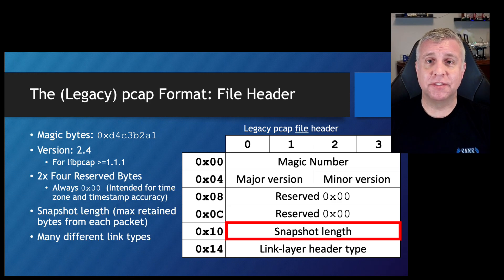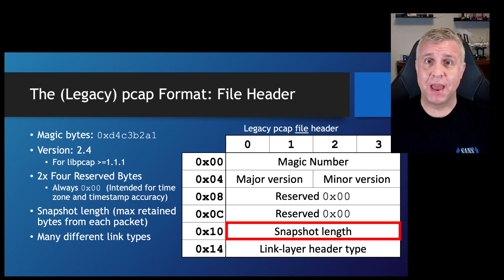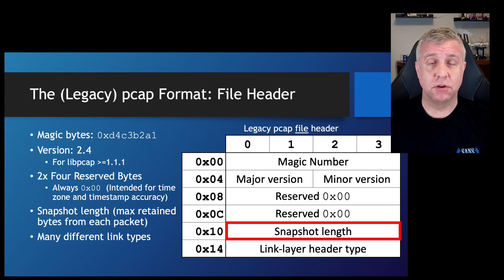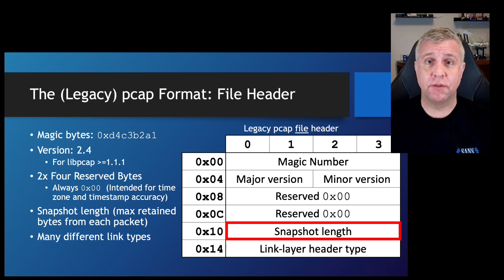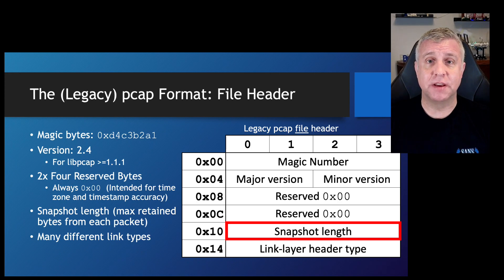The next value is called the snapshot length, which refers to the maximum number of bytes that the utility that created this PCAP file was told it's allowed to take. You might wonder why you wouldn't want all the bytes — but in some cases you're legally prohibited from capturing content and limited just to headers. Or maybe you're dealing with a shortage of storage space, so you say just give me the first 100 or 200 bytes. That trade-off of space for completeness is documented for us because the snapshot length will record exactly how many bytes were requested.